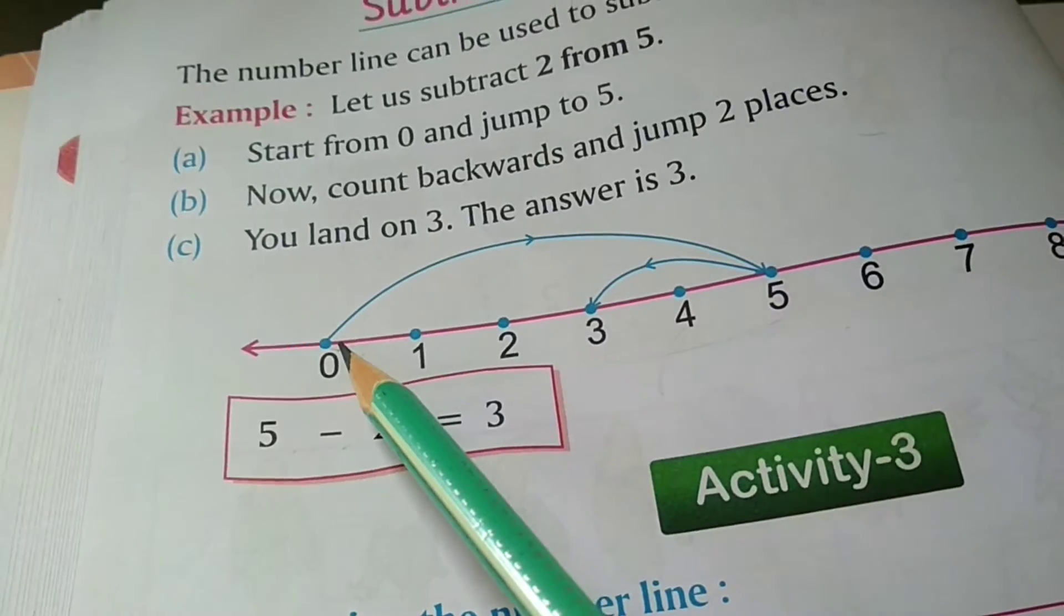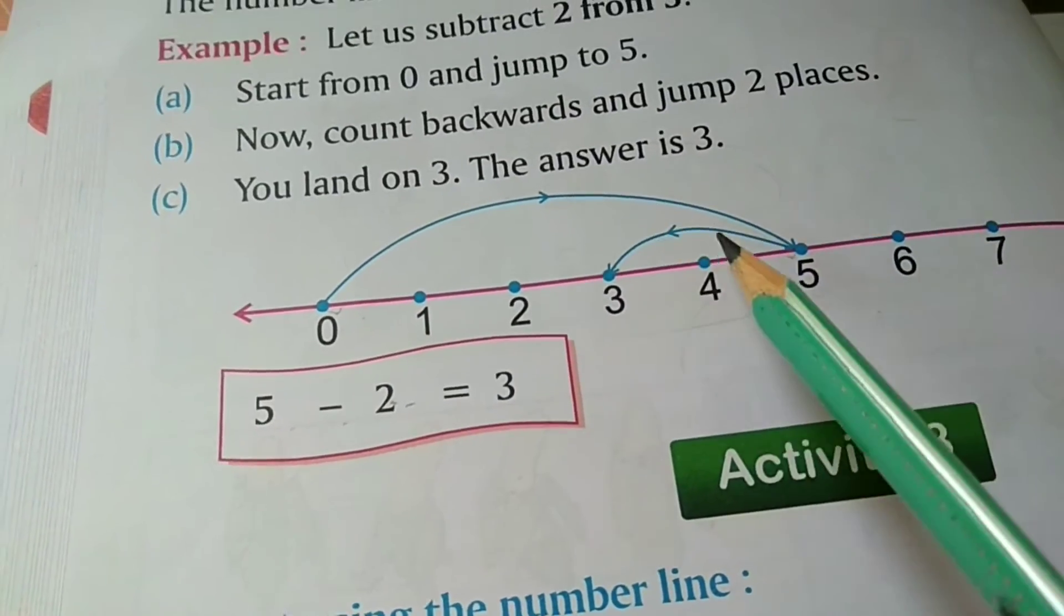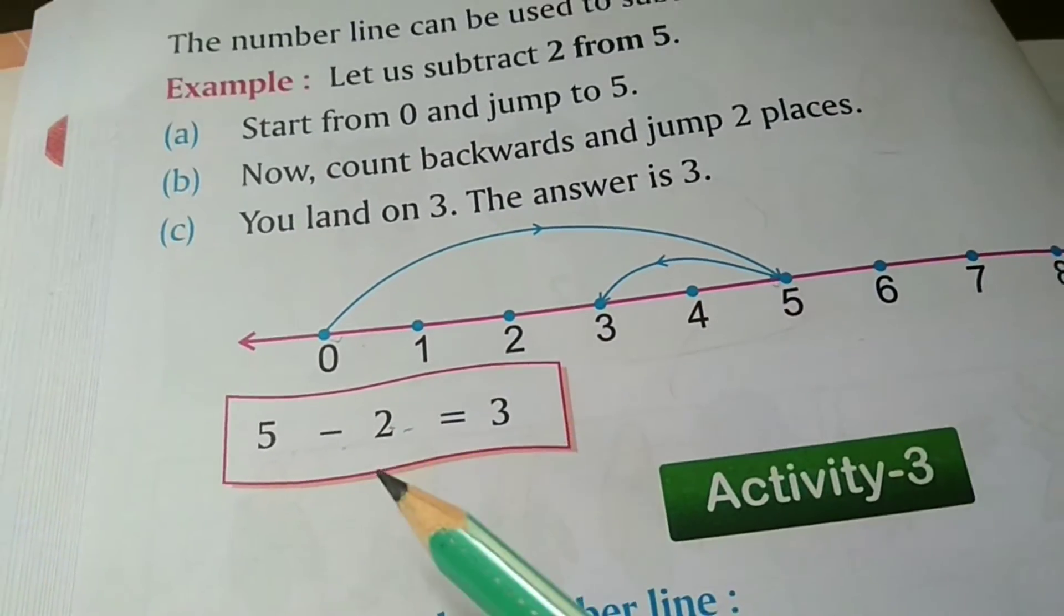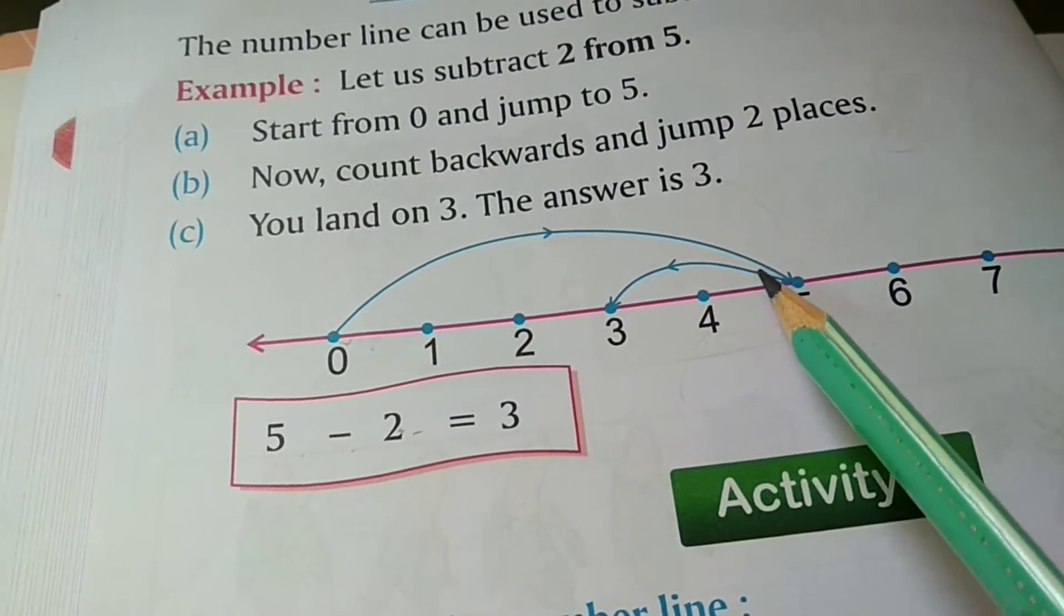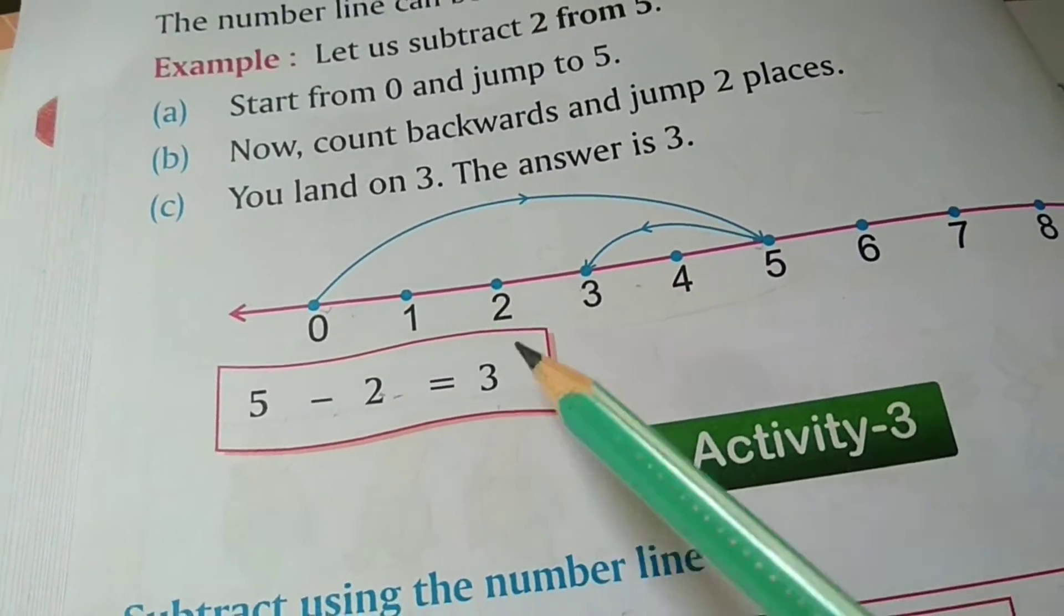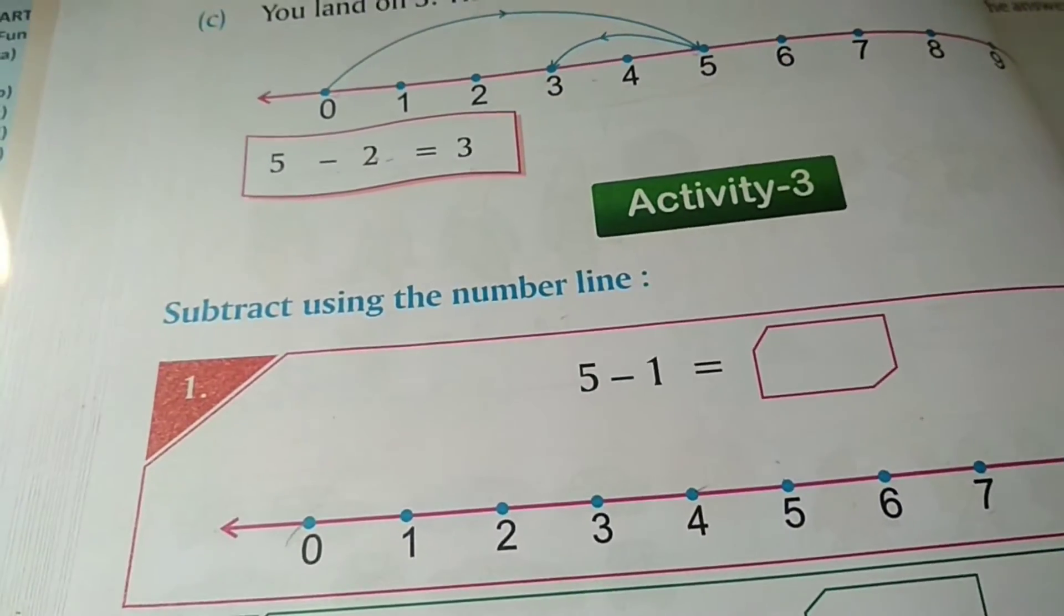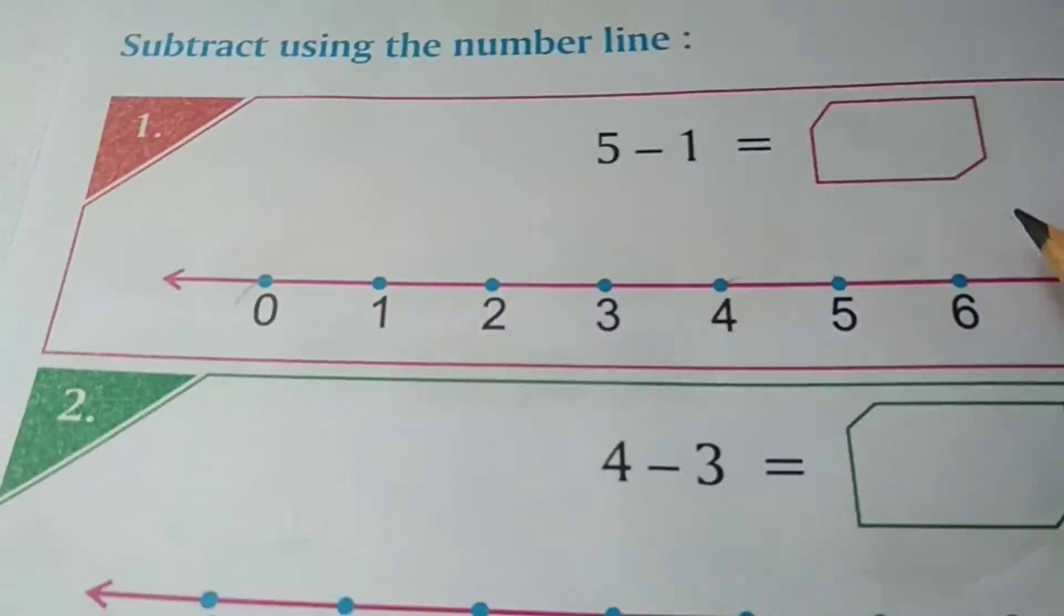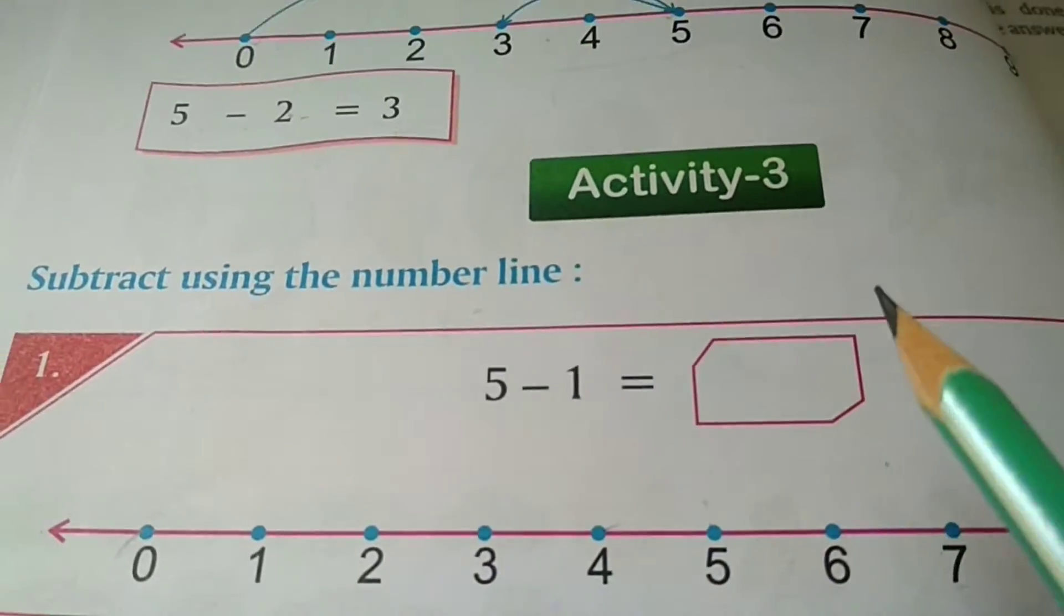Let's see example. That is 5 minus 2. So, 0 to 5, then backward jump 2 means you have 5 take away 2. Answer will be 3. 5 minus 2, you can also see that 5 minus 2 is 3. Let us see the next example. You will understand.